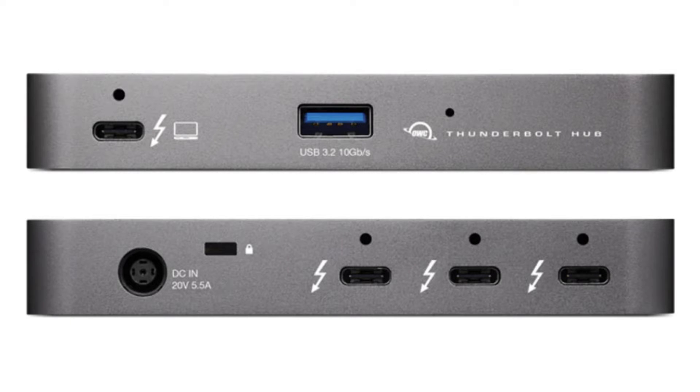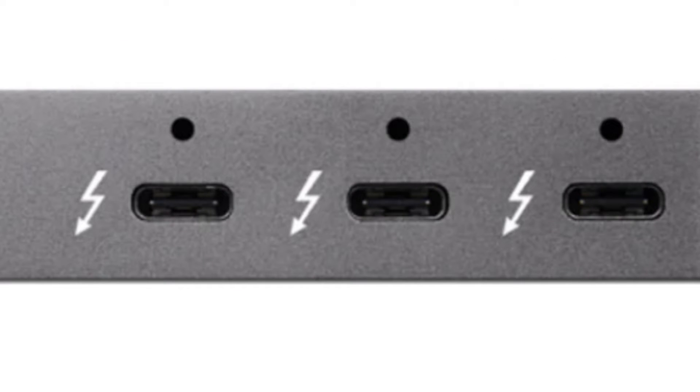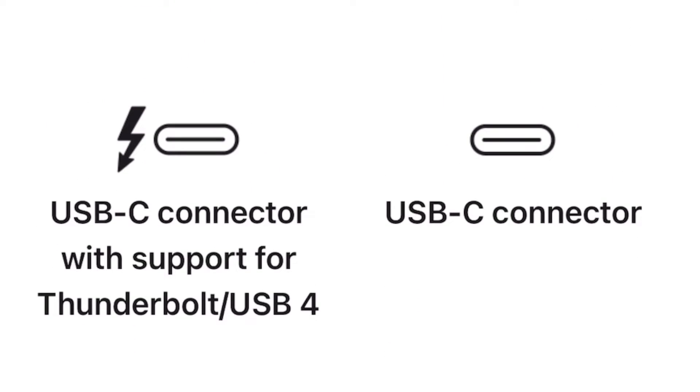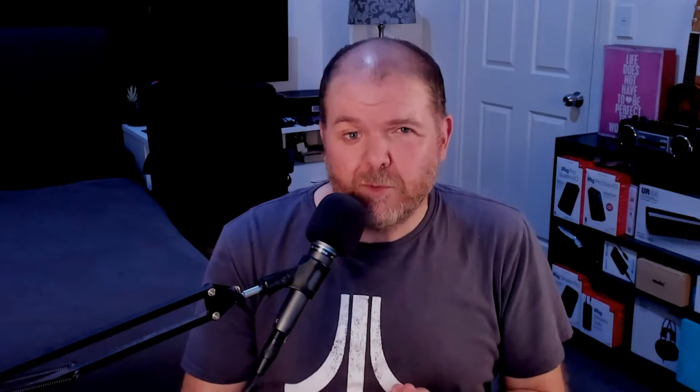How do you know what connector your device has and therefore what cable you can and should use? The first place to look is on the device itself. Many devices will actually have the Thunderbolt logo on them, and that way you'll know you've got Thunderbolt 3 or 4. The other place to look is the specifications — go to the website, check your manual, or look on the box of your device to see whether it is USB-C or Thunderbolt 3 or 4 compatible.